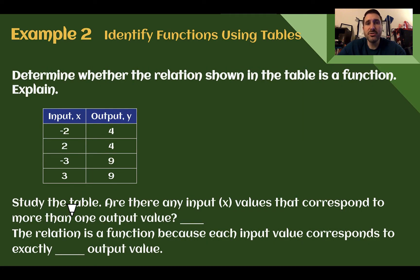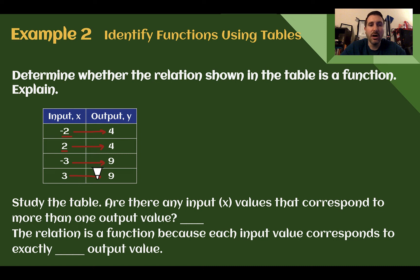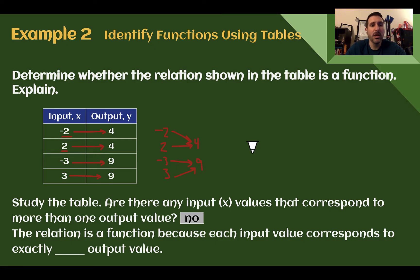Example 2: Identify functions using tables. Determine whether the relation shown in the table is a function — explain. We check negative 2: it goes to 4, and there are no other negative 2s, so negative 2 only goes to 4. Positive 2 also goes to 4, but there are no other 2s, so 2 only goes to 4. Negative 3 only goes to 9, and positive 3 only goes to 9. It's okay if two things point to the same output as long as they're not pointing to two different outputs. This is a function because each input only corresponds to exactly one output.